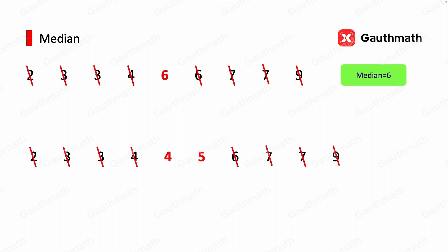Remember, when we have two middle values, we just take the average of those two to compute the median. In this case, the average of 4 and 5 is 4.5. So the median is 4.5.